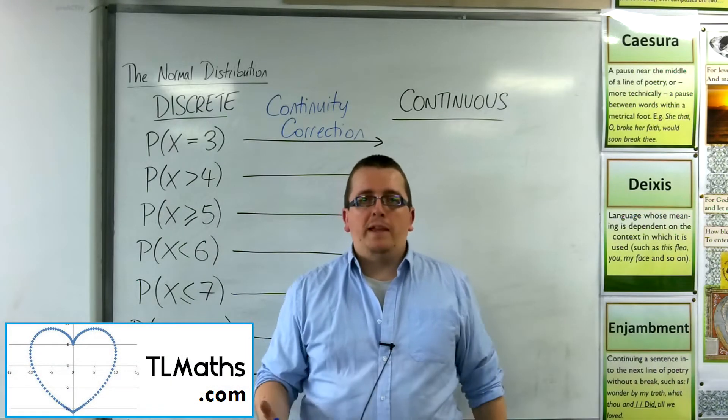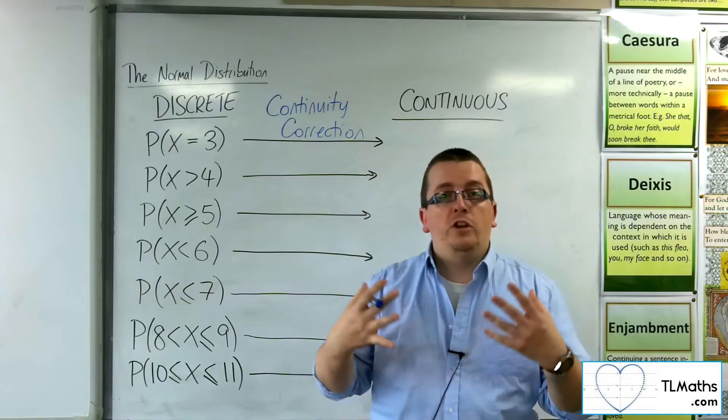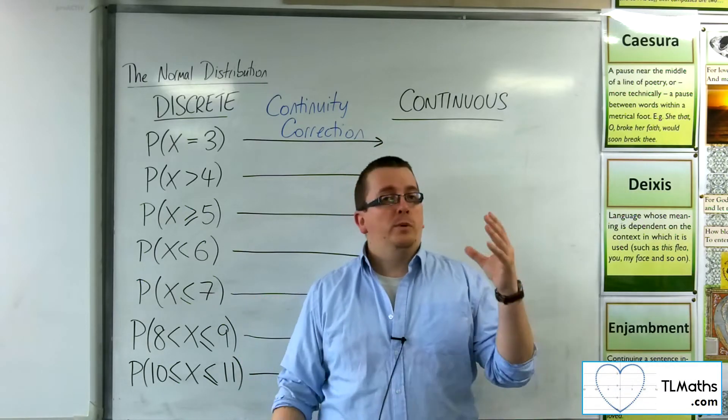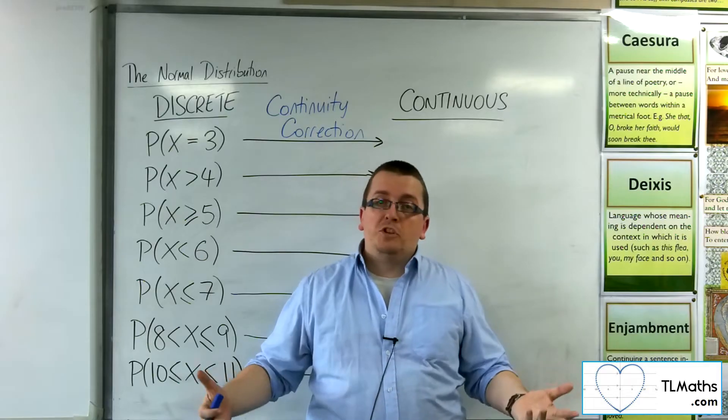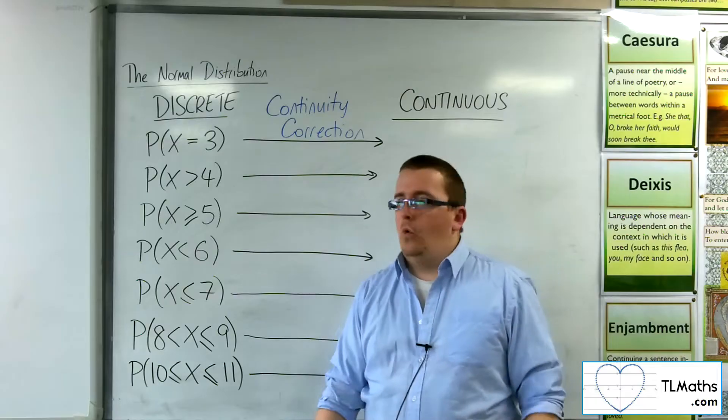In the previous video I explained that if we're going to be approximating a binomial distribution using a normal distribution, we're going from a discrete distribution to a continuous one. And subsequently, we've got to go through a continuity correction in order to make it work.